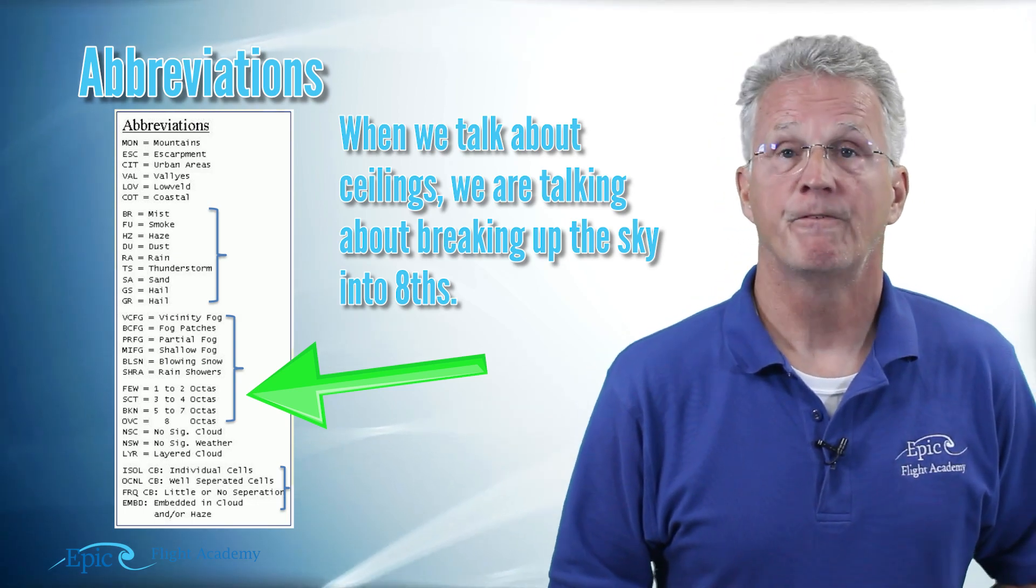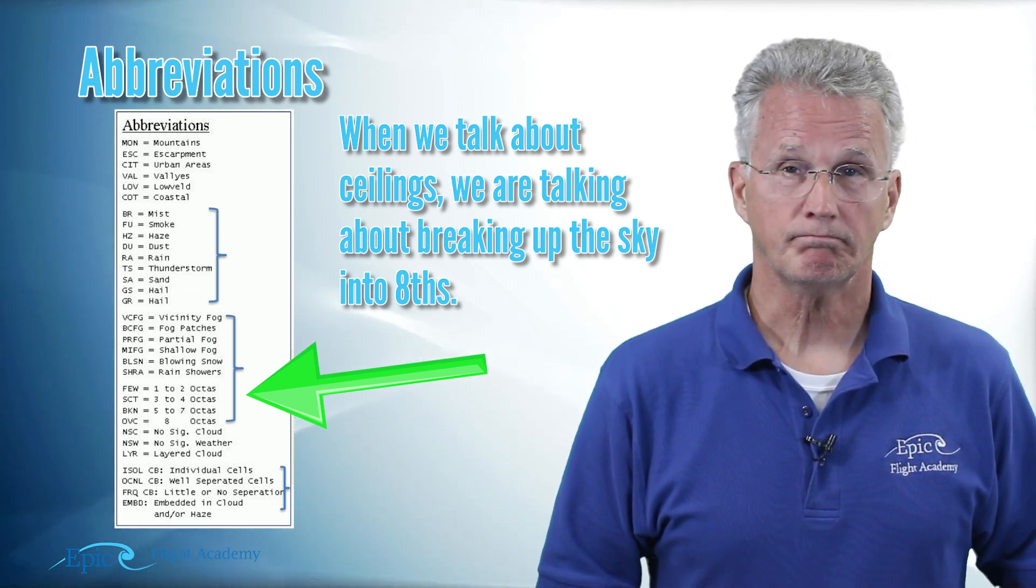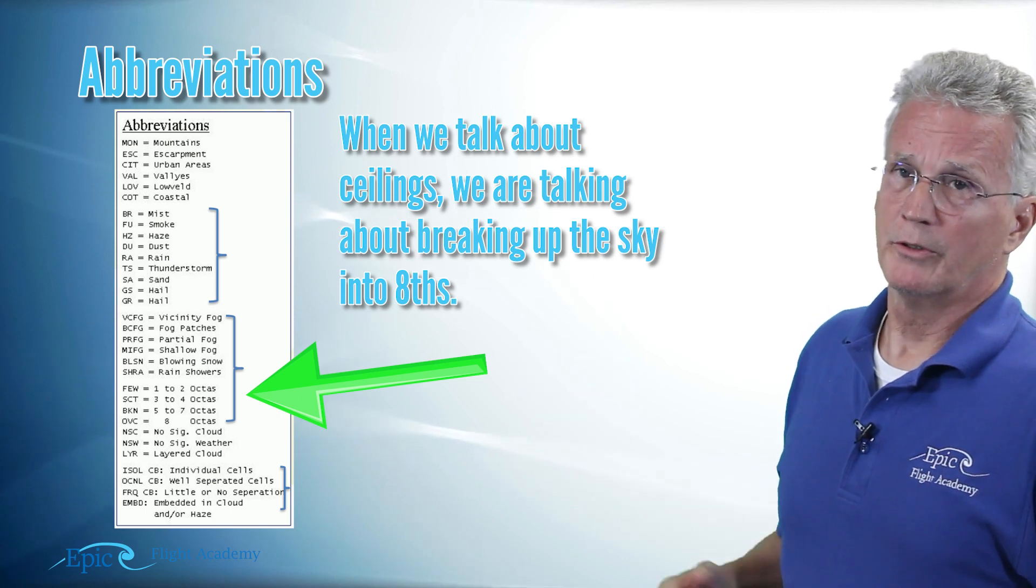Broken would be five eighths to seven eighths covered by clouds. Scattered means three to four eighths of the sky and few means one to two eighths of the sky.